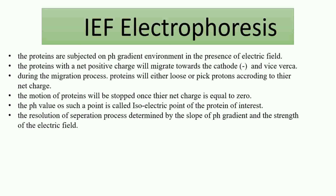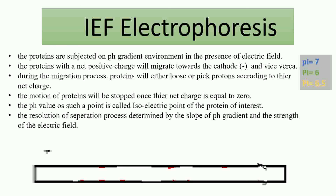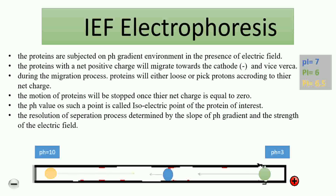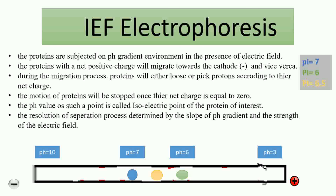The motion of each protein will be stopped when it reaches its isoelectric point — that is, when the net charge equals zero. For example, if we have three proteins with different isoelectric points and a strip with a pH gradient from 3 to 10, once strip rehydration is applied the proteins are absorbed into the strip. When the electric field is applied, the proteins move according to their net charge and stop when they reach their respective isoelectric points.